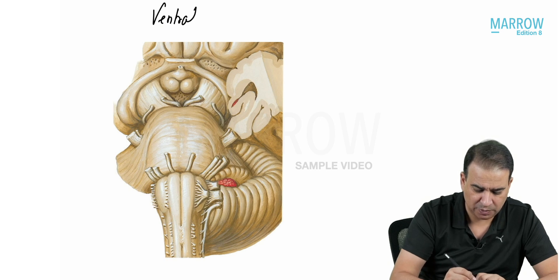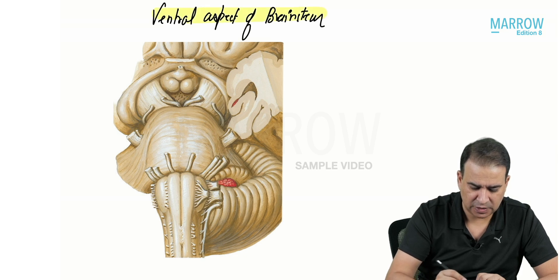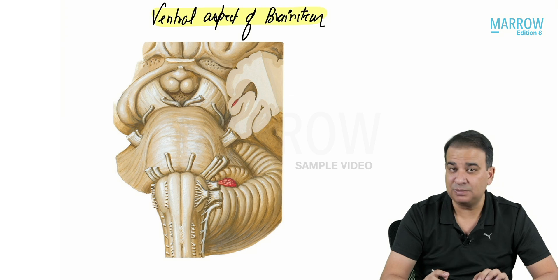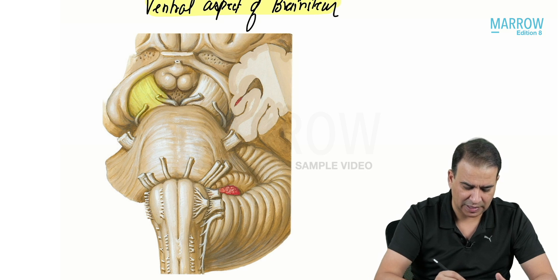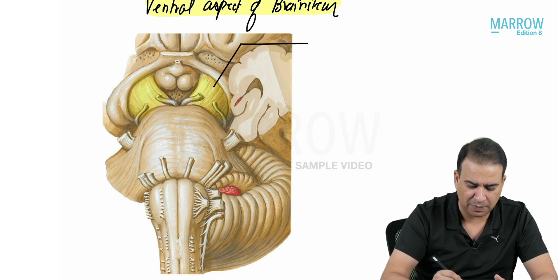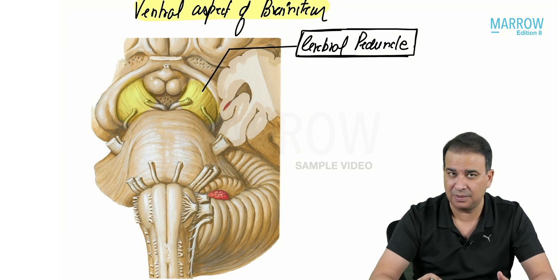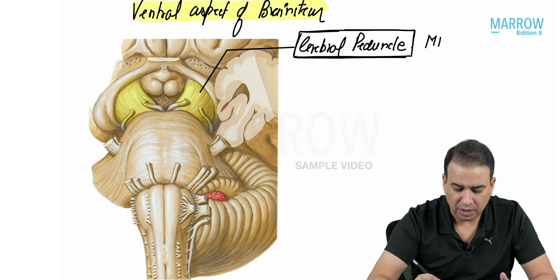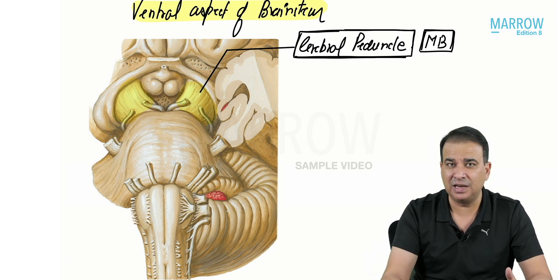This is the ventral aspect of the brainstem. In the ventral aspect, you will see how cranial nerves are emerging out. Let's identify the different parts. The area I'm highlighting is part of the midbrain called the cerebral peduncle. It contains the descending tracts coming from the cerebrum, so we call it the cerebral peduncle or crus cerebri. It is a portion of the midbrain — the ventral part — which gives passage to the descending tracts of the cerebrum. That's why the name is cerebral peduncle.